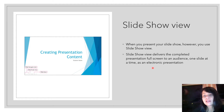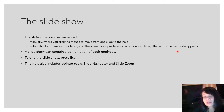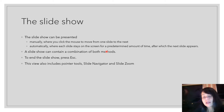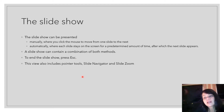When you present your slideshow you use the slideshow view, which delivers a complete presentation full screen to your audience one slide at a time. The slideshow can be presented manually, where you click the mouse to move from one slide to another, or automatically, where each slide stays on screen for a predetermined amount of time. A slideshow can also contain a combination of both methods. To end the slideshow, press Escape. The view also has pointer tools, slide navigator, and slide zoom.